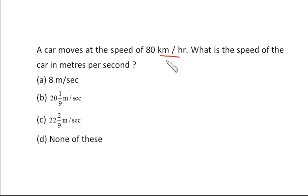So 80 kilometer per hour is equal to 80 into... we can convert kilometer to meter by multiplying 1000. Similarly, hours to minute is 60 and minutes to second, further 60.